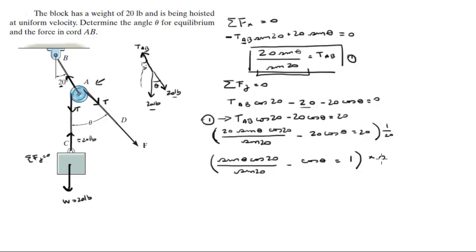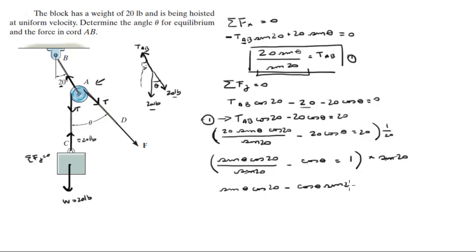Multiplying through by sine of 20 cancels the denominator, giving: sine of theta times cosine of 20 minus cosine of theta times sine of 20 equals sine of 20.